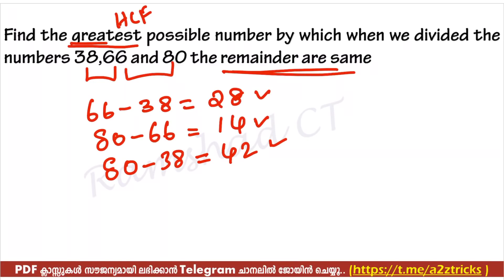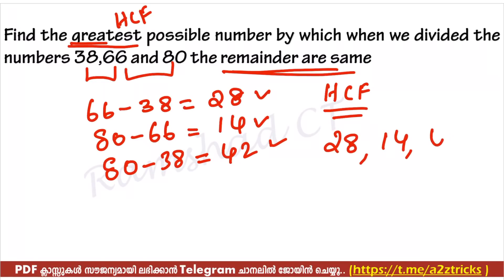The HCF is one thing. The LCM is another thing. The HCF is the greatest possible common factor. This is HCF — now look at what traditional methods we use.